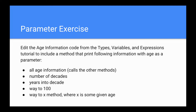We're going to do this exercise: edit the age information code in ageinformation.java to include a method that will print the following information with age as a parameter. We want one method that prints all the age information — a method for the number of decades, for the years into the decade, the way to 100 based on the age, and the way to x where x is some given age.